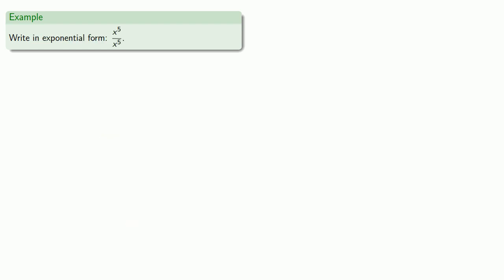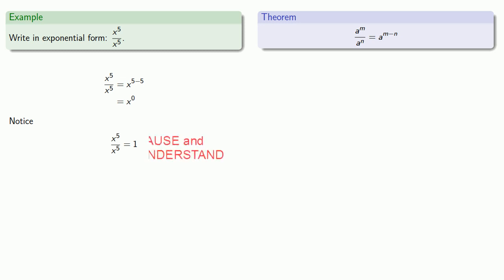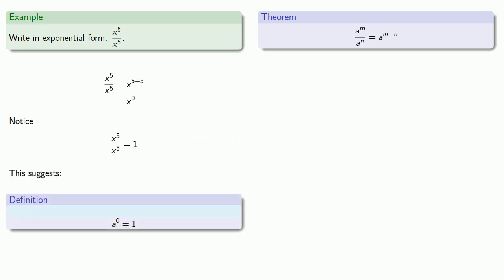What about x to the five over x to the five? Well, our theorem for the quotient of exponents says that this is going to be x to power five minus five, x to the zero. Now, here's where we have to discard common sense and use only logic. In particular, x to the zero says that x appears zero times. So what do we actually have there? Well, logic says that x to the five over x to the five, anything divided by itself is equal to one.